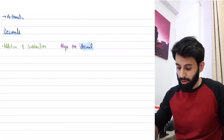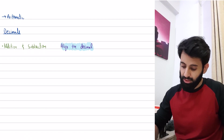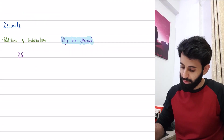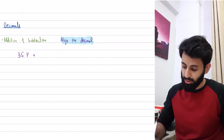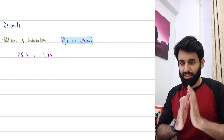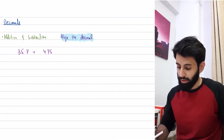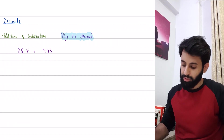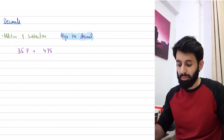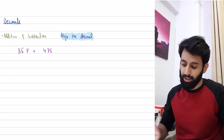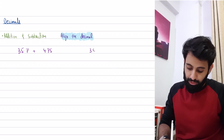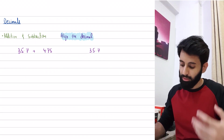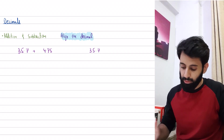Let me show you what I mean. Suppose you're asked to do 35.7 plus 4.75 — completely random numbers. To make sure you do it right, you need to rewrite them and ensure the decimal is lined up nicely. I'll write 35.7 first — there's no restriction that you must write the larger number on top — and then write 4.75 below it with the decimal aligned under the decimal.